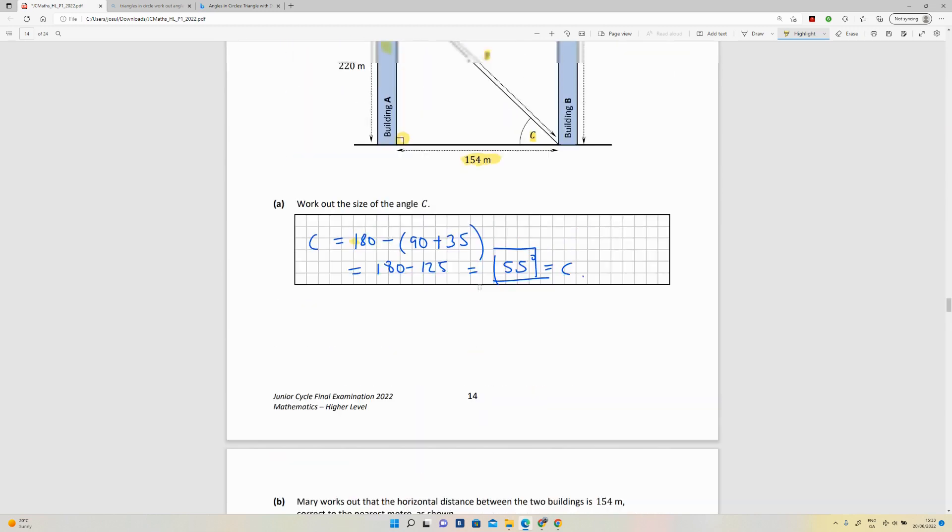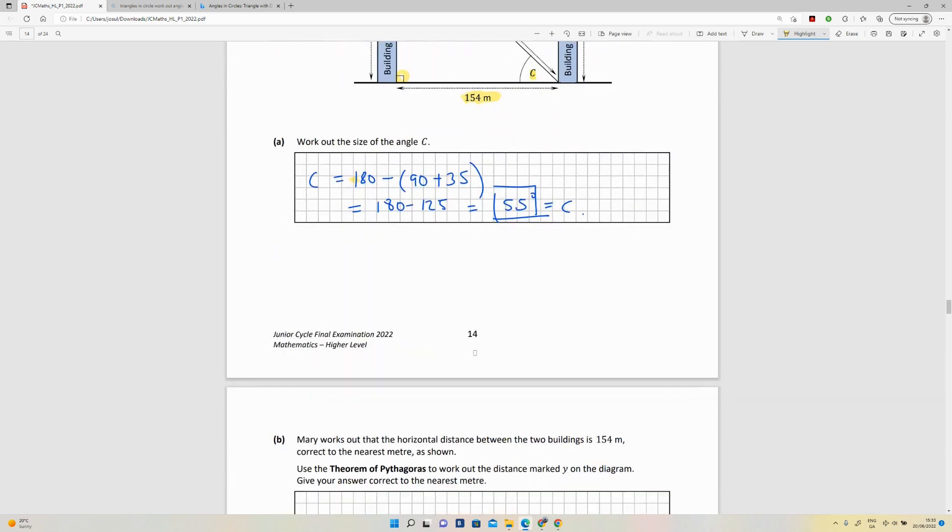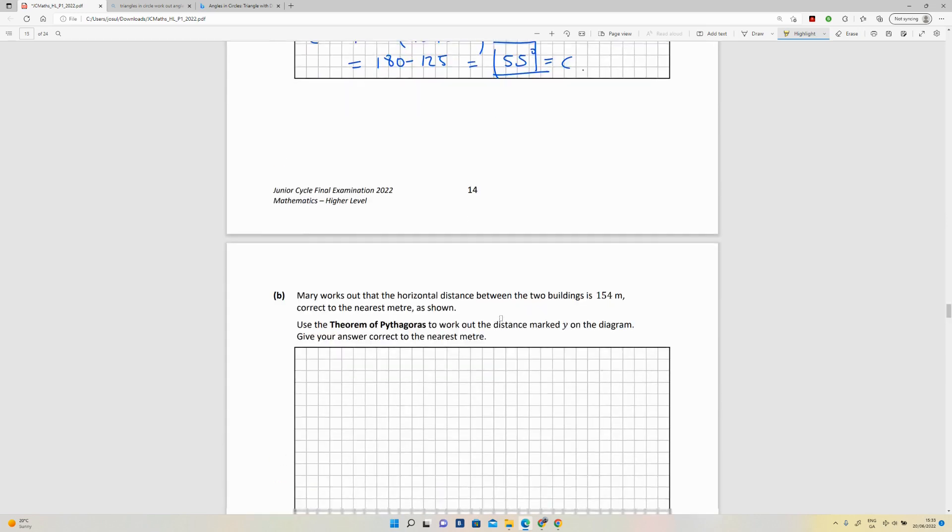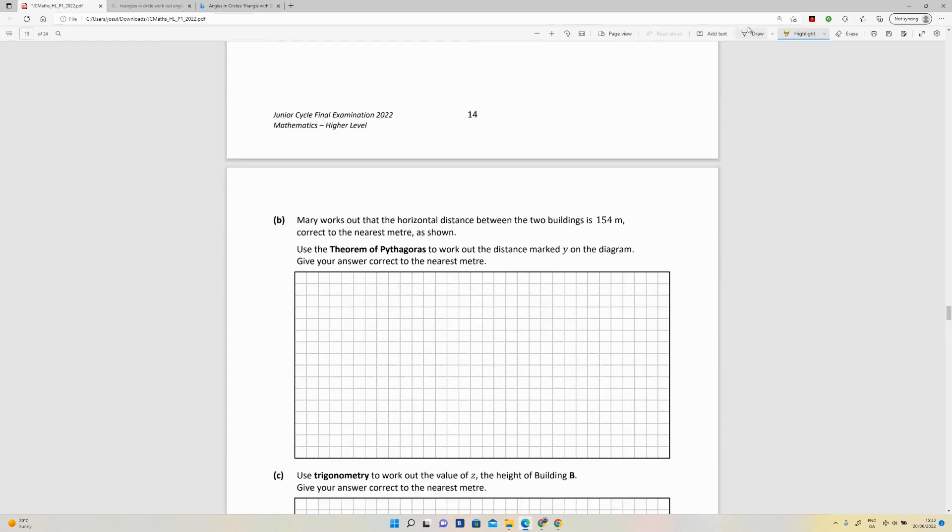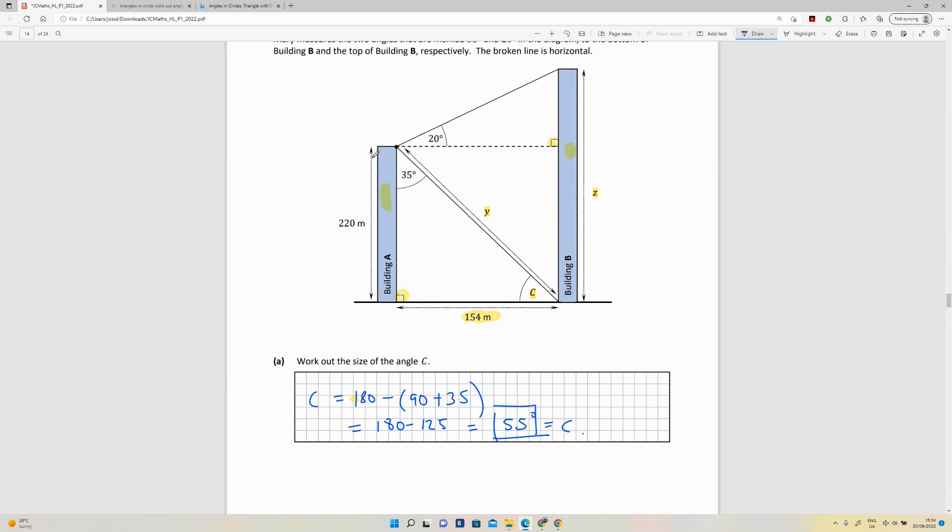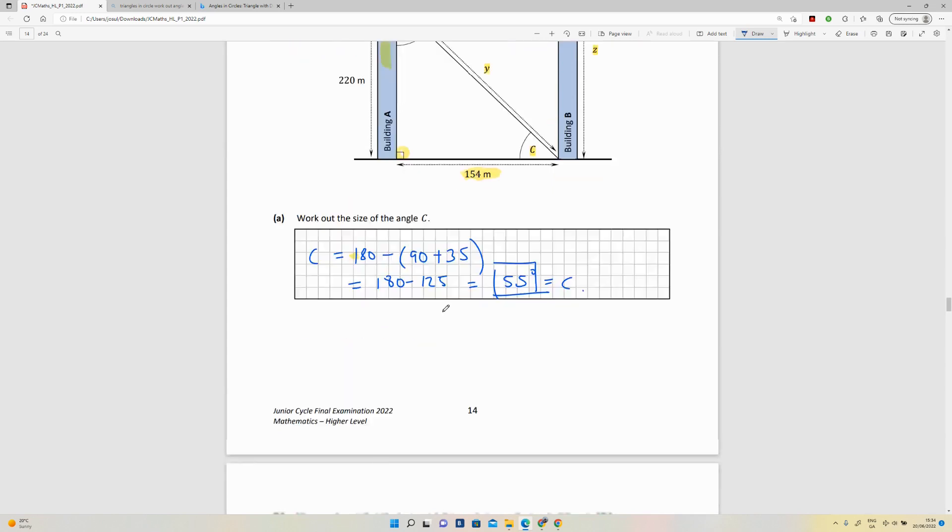So we want to work out y. Pythagoras or the hypotenuse is y in this case. So y squared is equal to, we want y of course, but let's start with y squared. So y squared is going to be 154 squared plus 220 squared, because we've been given that height of building B.